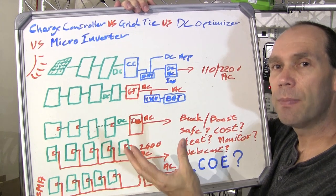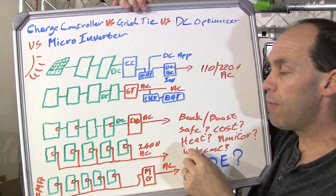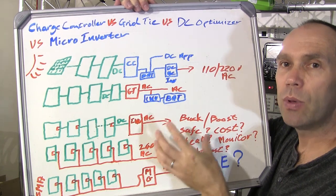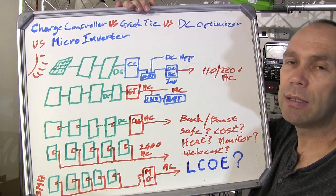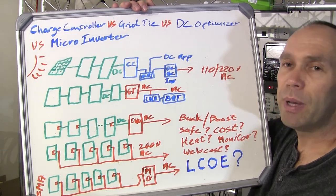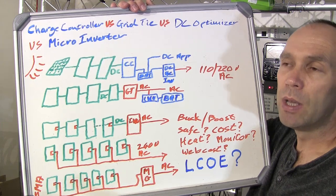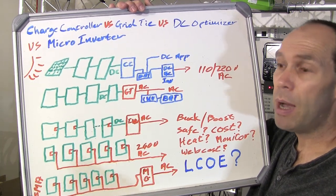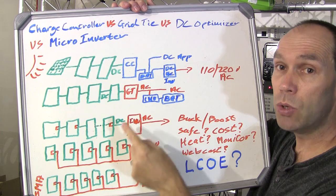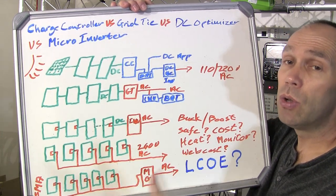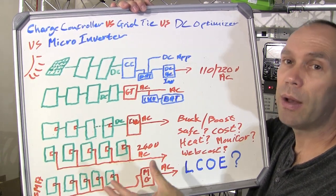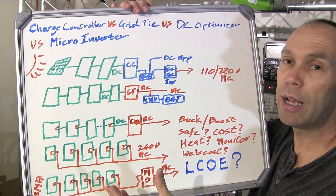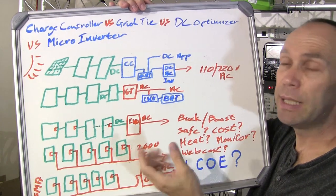What the micro inverter companies have been doing is increasing their warranties — initially smaller warranties, they've now moved up to 20-25 year warranties. But of course they haven't been in the field that long to really prove themselves. So if you're going to go the DC-optimized route or the micro inverter route, do not buy cheap — you certainly want to go with a name brand that you know will still be around in years to come, because we don't have a full understanding of the potential failures particularly in warmer climates.